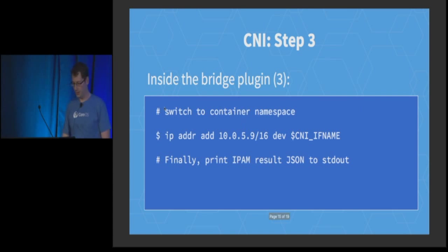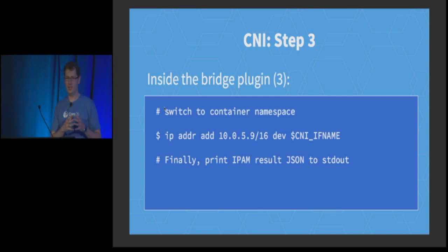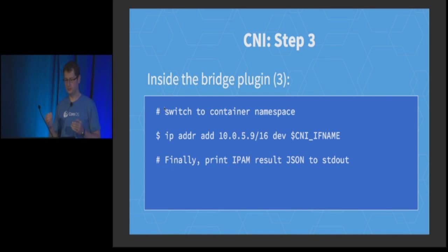The last step is for the bridge plugin to take the information from that JSON snippet and apply it to the interface it set up previously. Finally, it returns that same JSON snippet via standard-out back to the container runtime. So we have two levels of plugins, but they compose. The top-level plugin decides at what point in time it wants to invoke the IPAM, and that is crucial — since there is no predetermined right way of when to invoke the IPAM plugin, it has to be up to the top-level plugin to decide when to call the IPAM.